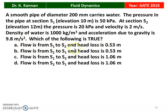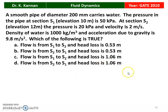Option A: Flow is from S1 to S2 and the head loss is 0.53 meter. Option B: Flow is from S2 to S1 and head loss is 0.53 meter. Option C: Flow is from S1 to S2 and head loss is 1.06 meter. The correct answer is: flow is from S1 to S2 and the head loss is 1.06 meter.